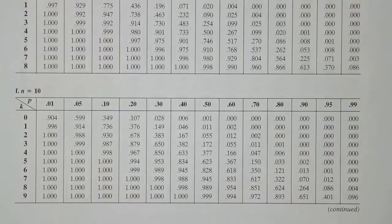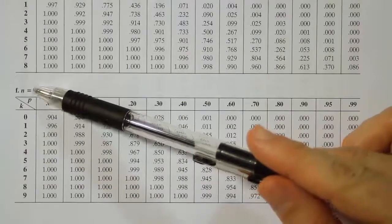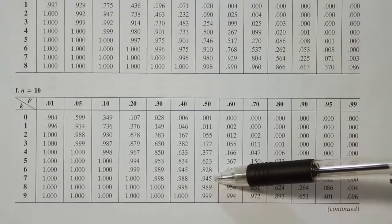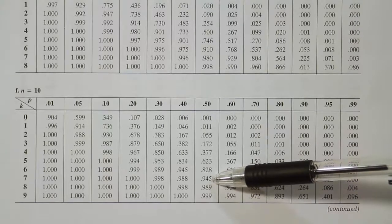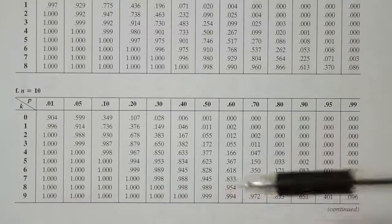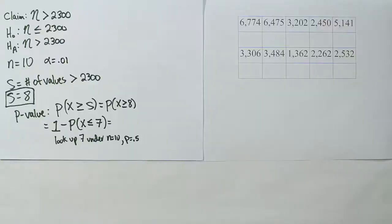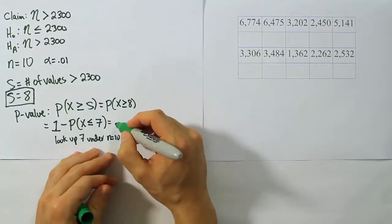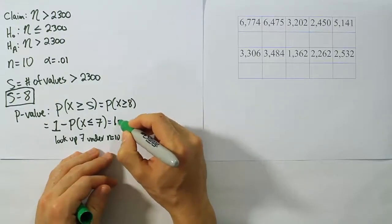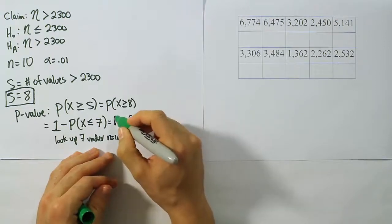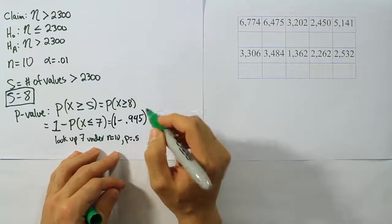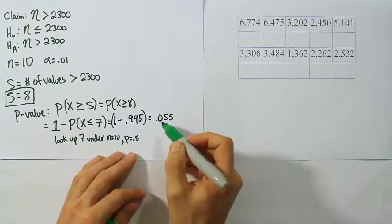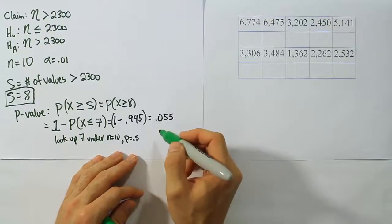So we're on the binomial table where n is 10. We're going to come down to where k is 7 and then over to where p is 0.5. And when we do that, we find the answer 0.945. So it'll be 1 minus 0.945. And when you take the difference of these, of course you're going to get the answer 0.055. So 5.5% turns out to be our p-value.